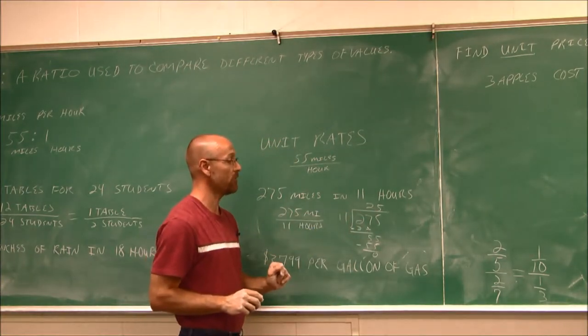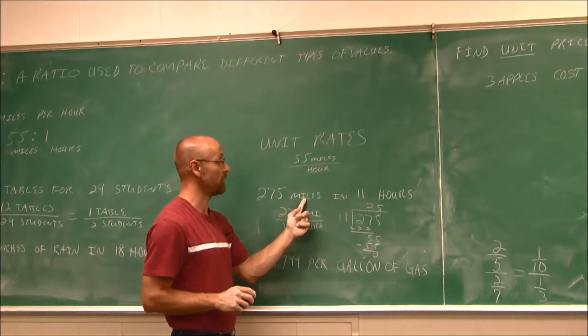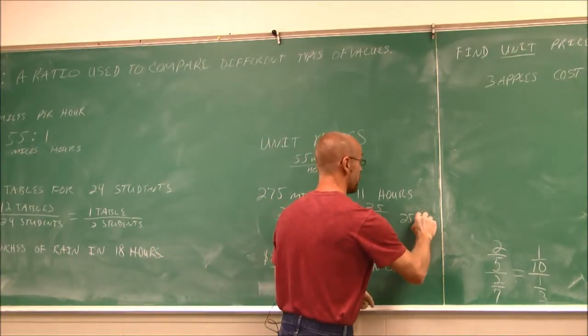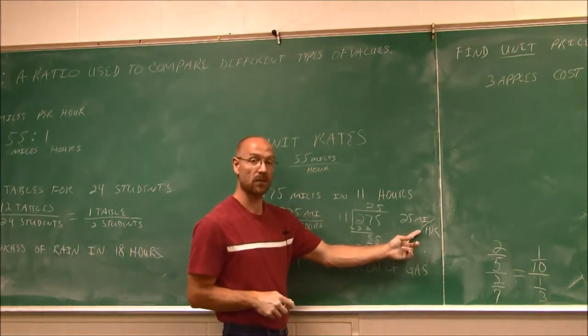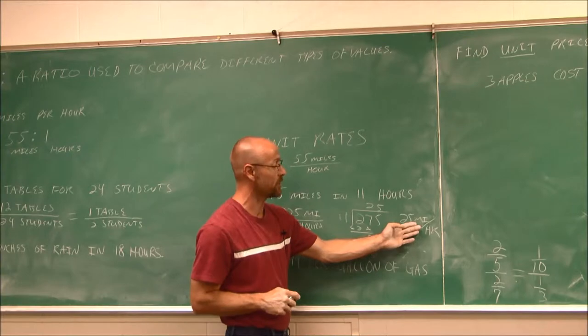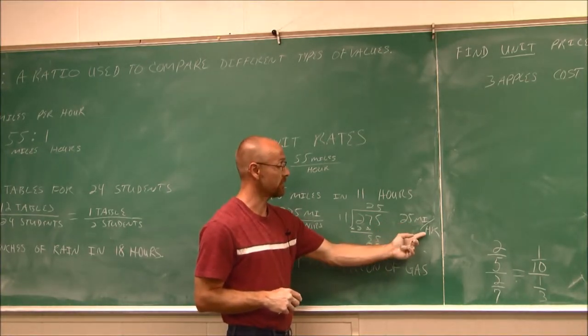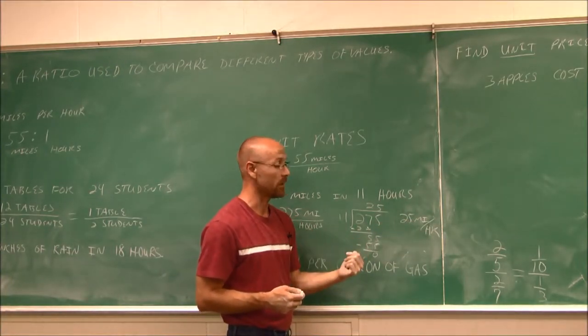11 goes into 55 five times with no remainder. So 25 is my unit rate, 25 miles per hour. The nice thing about unit rates is we can write their unit separately from the coefficient. Because this denominator is 1, and anything divided by 1 is still that number, 25 miles per hour.